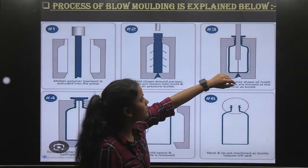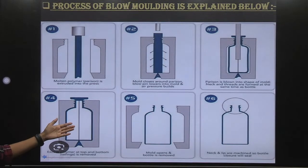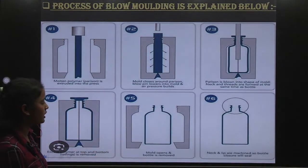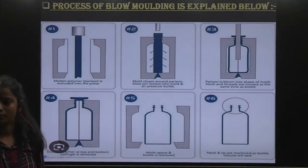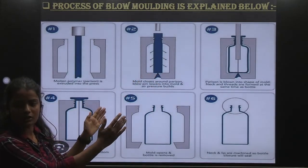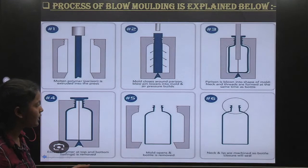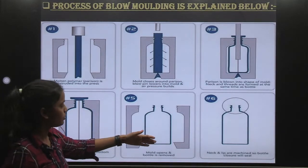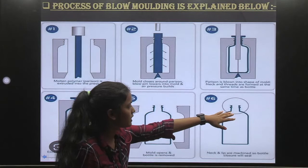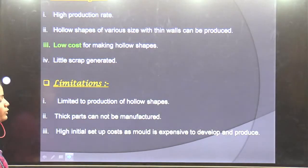The mold is made of the internal structure shape. The plastic material will take the same shape as the mold. Then we leave it to cool. Then we open the mold, manufacture the product, and remove it from the outside. Then we remove the extra parts and remove the product from the mold.